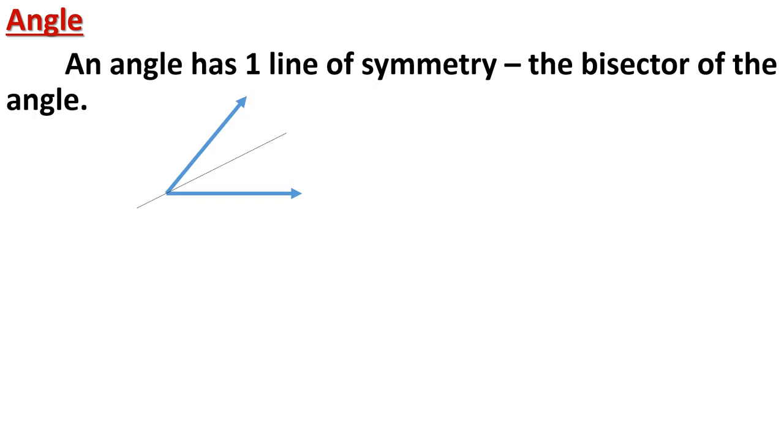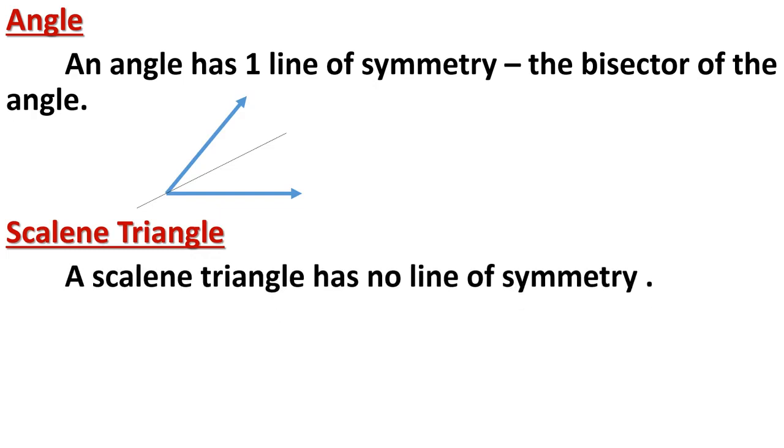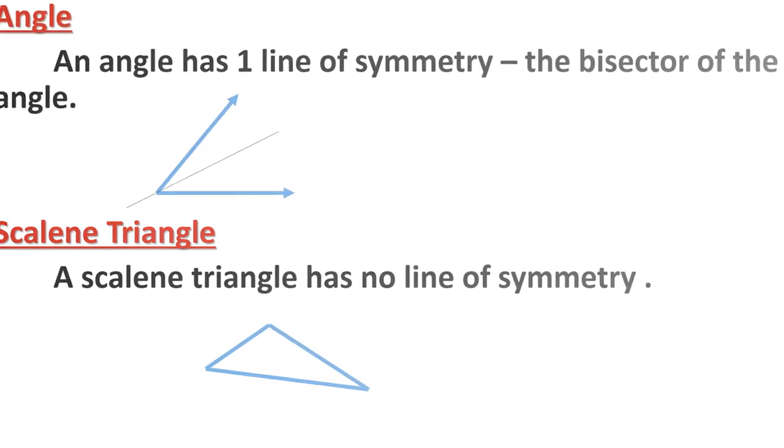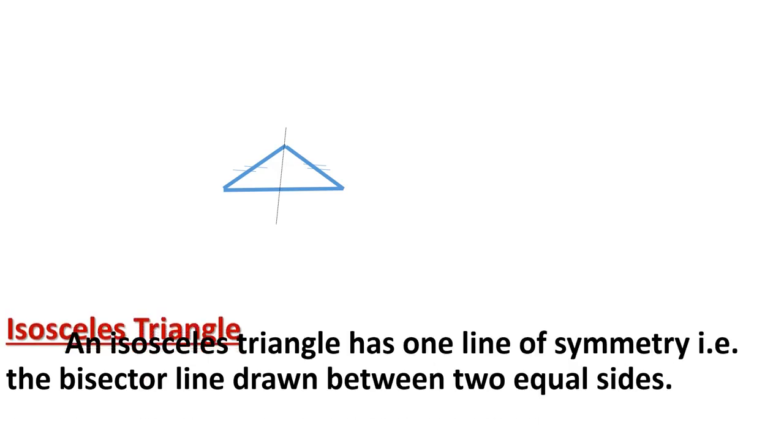Next is the scalene triangle. A scalene triangle has all three sides of different lengths — no two sides are equal. Therefore it has no line of symmetry. You can see the scalene triangle drawn; we cannot make any line such that both halves totally overlap each other.